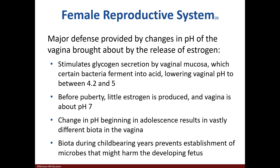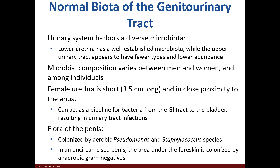The major defense of the female reproductive system is changes of pH. As estrogen is released, bacteria ferment and release acidic products. Prior to puberty, the pH of the vagina is about 7. Once puberty occurs, the microbiome also changes, and during childbearing years the microbiome may harm the fetus. The lower urethra has a plethora of microbes, while the upper tract has a smaller amount. The female urethra, as close as it is to the anus, may be a route to transfer bacteria from the GI tract to the bladder.